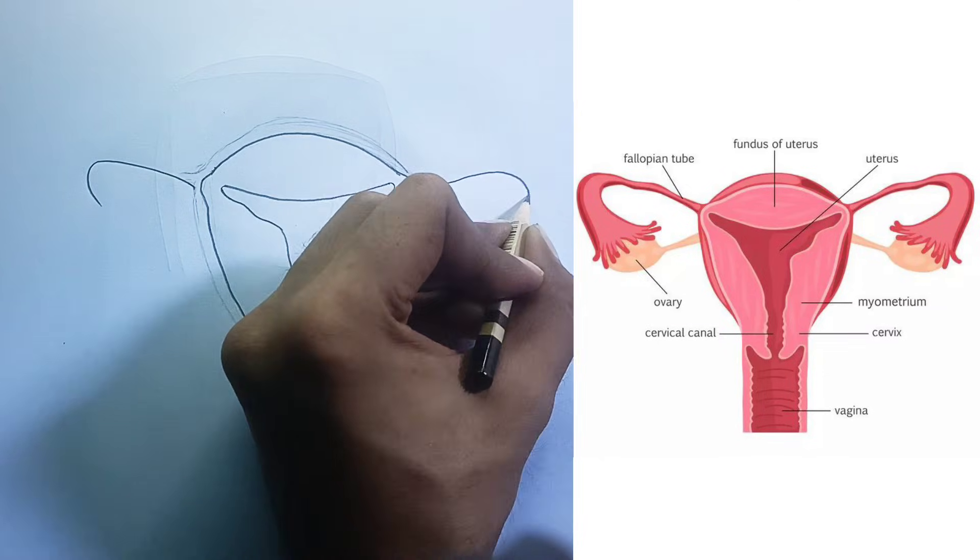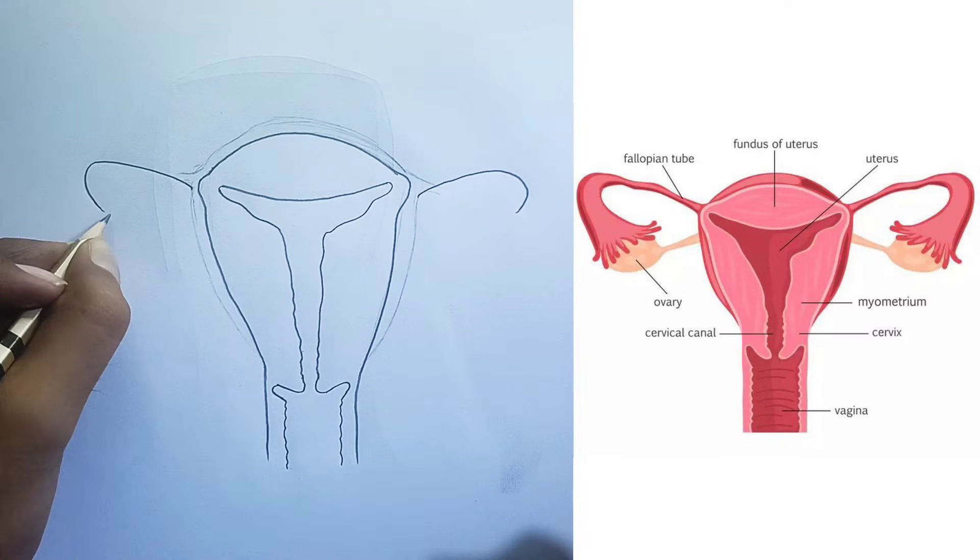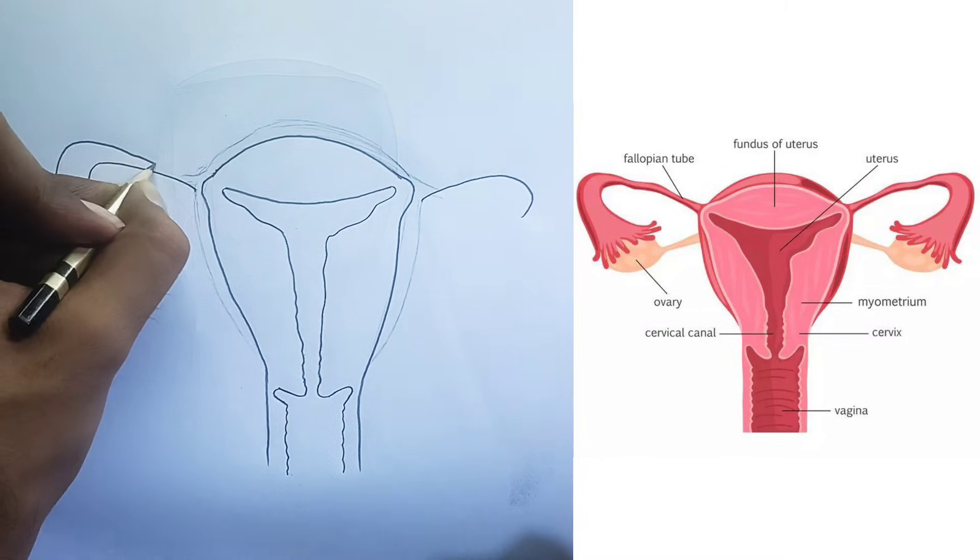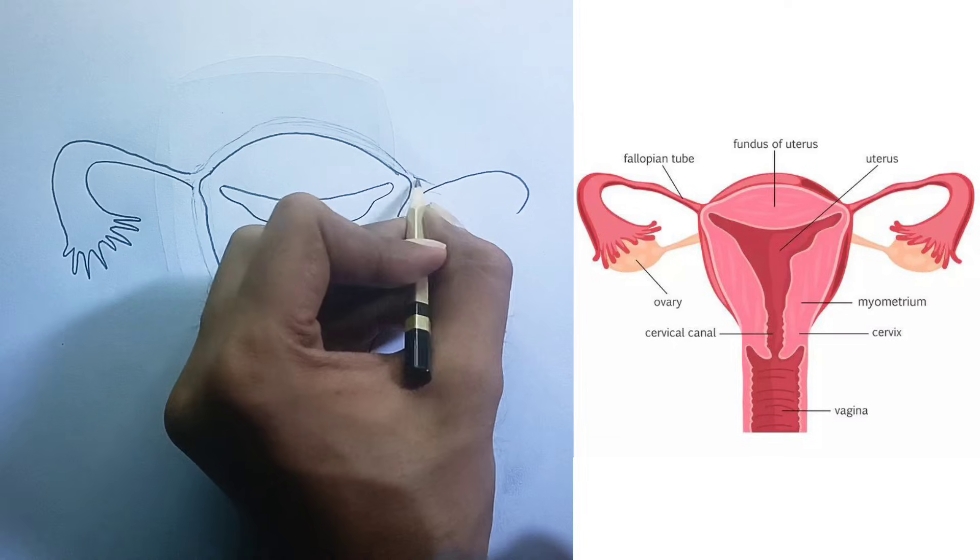Vagina. This is a muscular, elastic tube that connects the uterus to the outside of the body. It serves as the birth canal, the passageway for menstrual flow, and receives the penis during sexual intercourse.